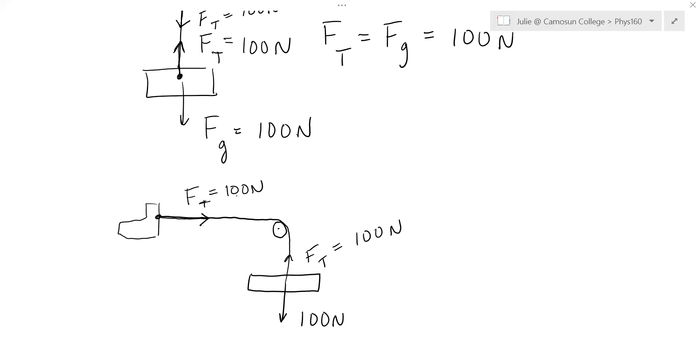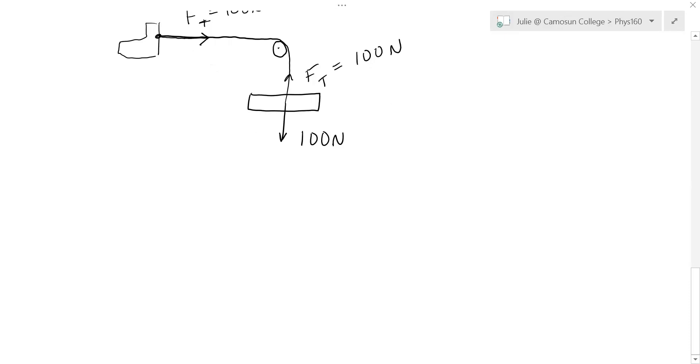Now, if you want a bigger force out of that same hanging mass, you could run the string around a couple of pulleys or three pulleys. So this is called a one pulley traction system. And there's a problem on your assignment where you need to analyze what the force on that foot is.